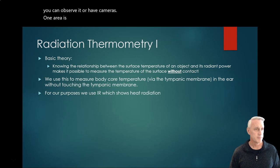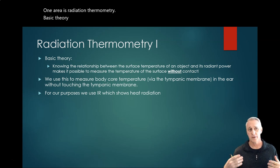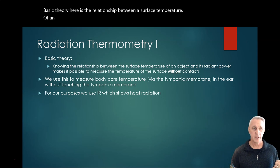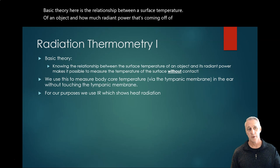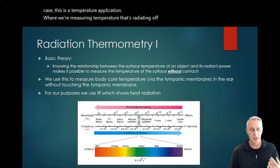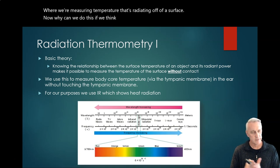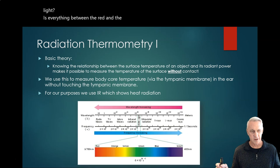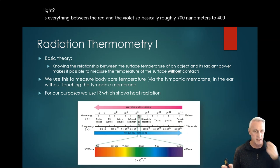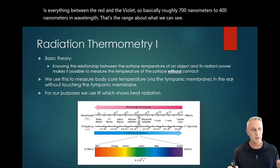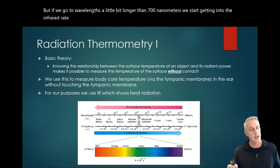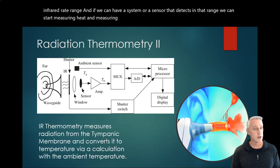One area is radiation thermometry. The basic theory is you know the relationship between a surface temperature of an object and how much radiant power is coming off of it. This is a temperature application where we're measuring temperature radiating off a surface. Visible light is everything between red and violet — roughly 700 nanometers to 400 nanometers in wavelength. If we go to wavelengths a little bit longer than 700 nanometers, we start getting into the infrared range. With a sensor that detects in that range, we can start measuring heat. So it's IR that we're actually measuring in this case.